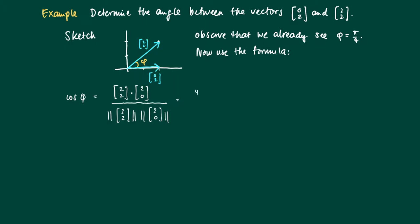So this equals, the numerator we get 4. The denominator we get the square root of 2² plus 2², which is the length of [2,2], times the square root of 2², which is the length of [2,0], which is of course 2, which makes 1/2 times the square root of 2. So the accompanying φ between 0 and π is of course π/4.